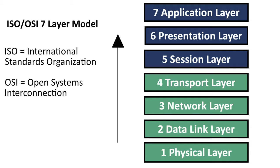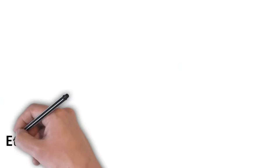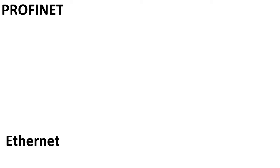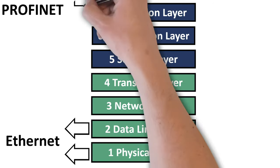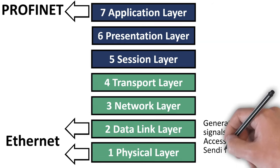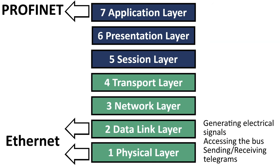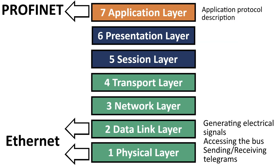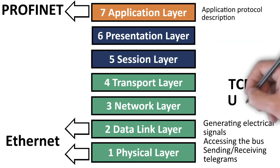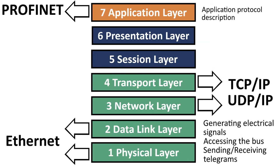Each of these layers has a specific function. Where do Ethernet and Profinet sit in this model? Ethernet lives at layers 1 and 2, and Profinet at layer 7. Layers 1 and 2 are all about generating electrical signals, accessing the bus, and sending and receiving telegrams. Layer 7, on the other hand, is the top layer and it describes the application. You might also be familiar with TCP/IP or UDP/IP — they both reside on layers 3 and 4 of the model: Network and Transport.